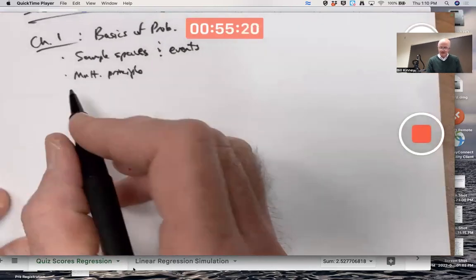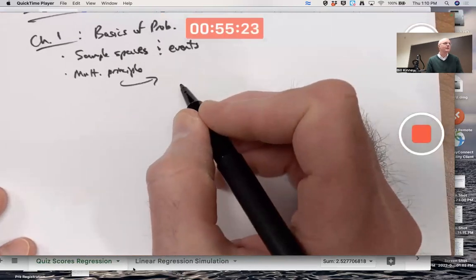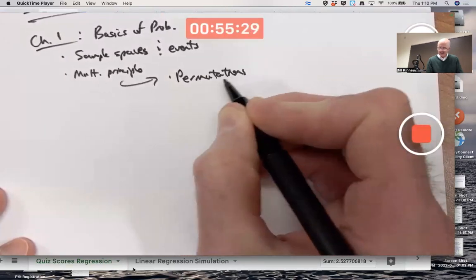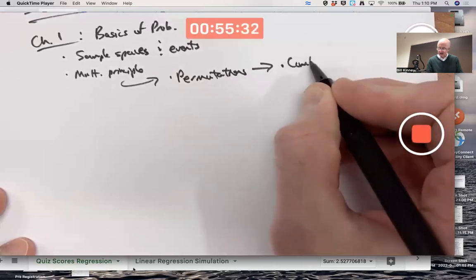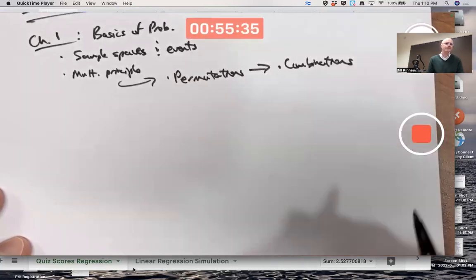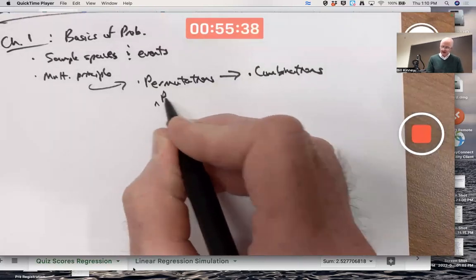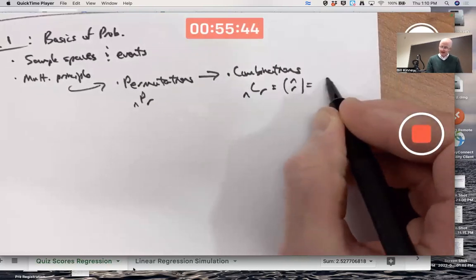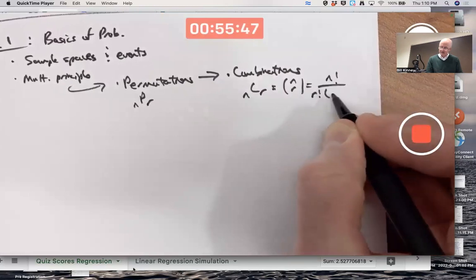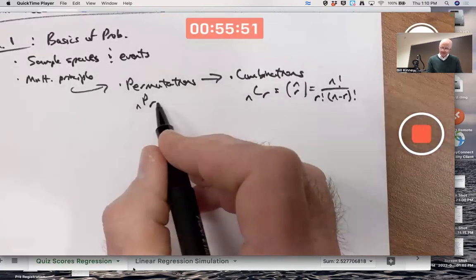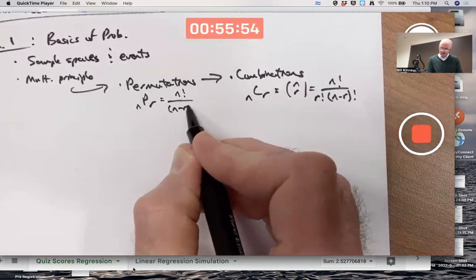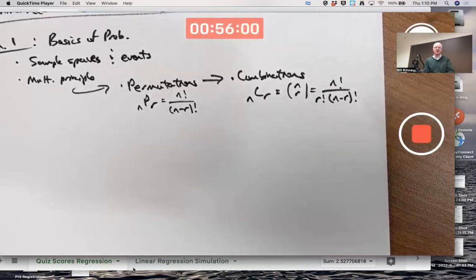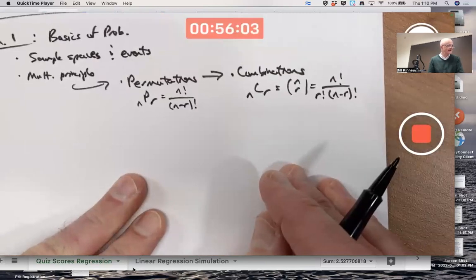The multiplication principle leads to the formula for permutations. And that leads to the formula for combinations. NPR, NCR, or N choose R if you like. This one being N factorial over R factorial times N minus R factorial. This one being N factorial over N minus R factorial. When you apply these ideas, permutations, the order matters. Combination, the order does not matter.